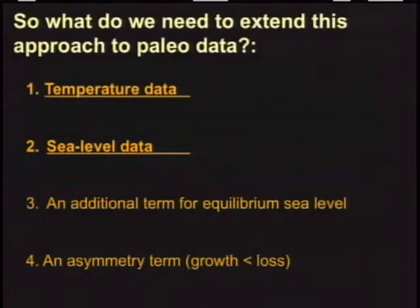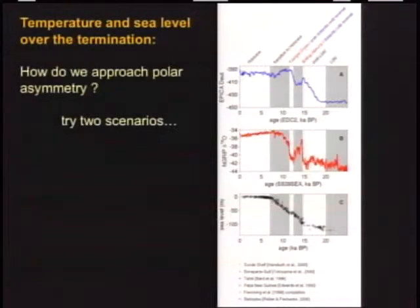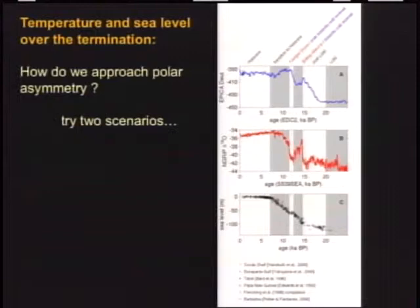So what do we need? We need temperature data, sea level data, some additional term to explain equilibrium sea level, and some asymmetry term — because during the termination there are periods of relative cold and relative warm, so we need to think about periods when the ice sheets might have regrown slightly or at least slowed down their loss. For temperature records, one of the problematic things about using the termination is the strong polar asymmetry. I'm going to use two scenarios: the EPICA deuterium temperature record to force the termination, and the North GRIP temperature record to force the termination. And I'm going to use fossil sea level reconstructions which include fossil and other sea level indicators.